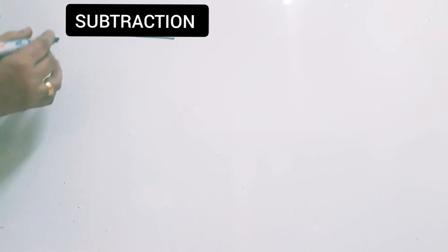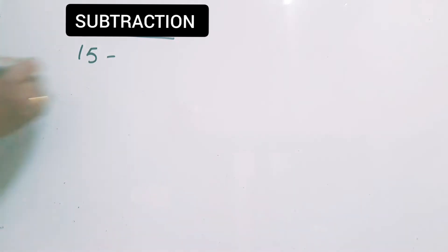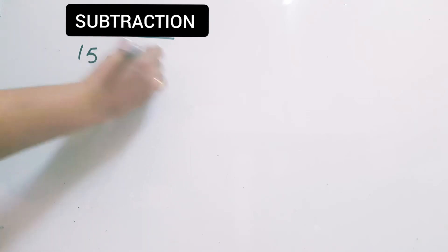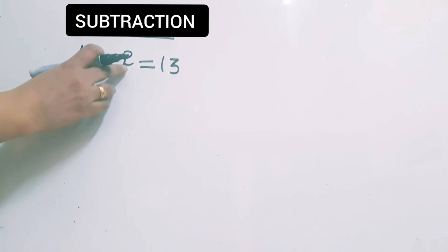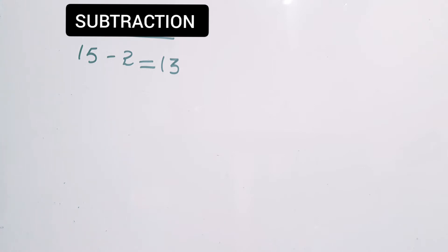So what is the meaning of subtraction? Taking away some objects or numbers from a group. Suppose 15 minus 2 — you know its answer is 13, right? So taking away some numbers. It can be any number. Here I am taking away 2 from 15, and we got the answer 13.